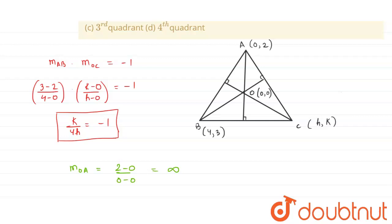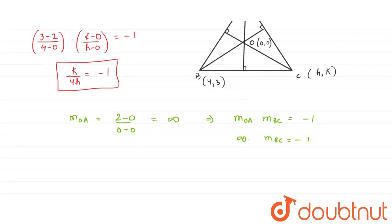Therefore, slope of OA × slope of BC = −1. We have slope of OA = infinity, so slope of BC = −1/infinity = 0. So the slope of BC equals 0.